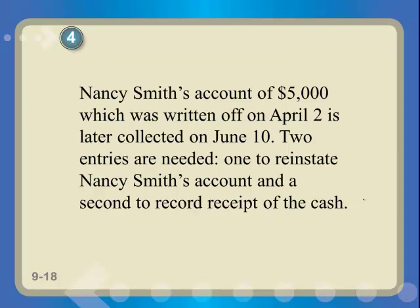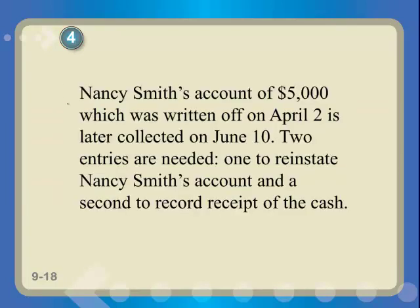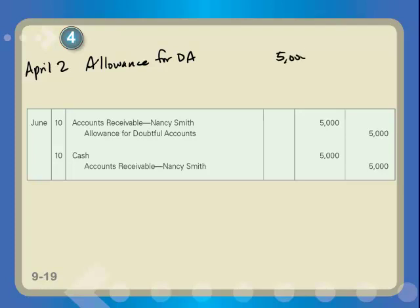Another example: Nancy Smith's account of $5,000, which was written off in April, is later collected on June 10th. We need to do two entries — reinstate her account and then book the receipt of cash. When we wrote off her account on April 2nd, we debited allowance for doubtful accounts for $5,000 and credited her accounts receivable for $5,000 — that's the same write-off entry we just looked at.